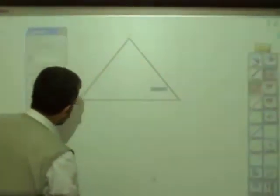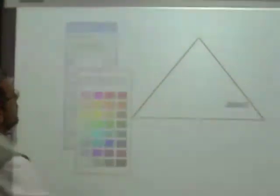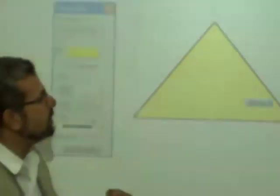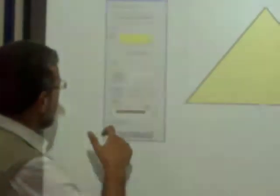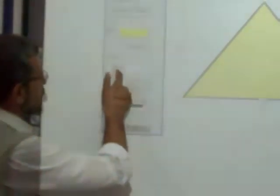From the menu you can take the object properties. From object properties you can change some of the properties of this shape. You can click on fill and click on the yellow color. You can see the yellow color here.